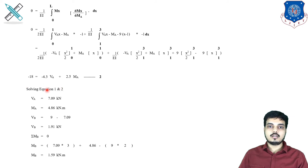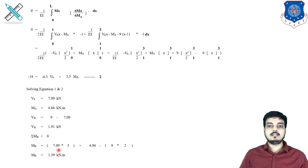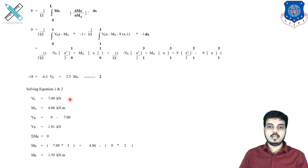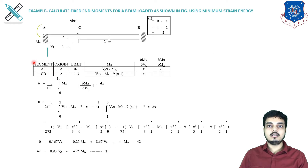Similarly, multiplying by the second derivative term and integrating gives equation number 2. After solving both equations we get values for VA and MA. Then using total upward load equals total downward load — 9 minus VA gives VB. For the moment at B, taking summation of moments at B equals 0: MB = VA·3 + MA − 9·(distance 2). So we get the value of MB. The key change in this problem was taking the origin at point A.